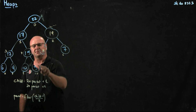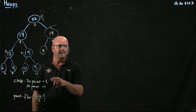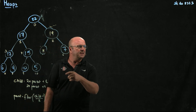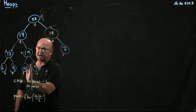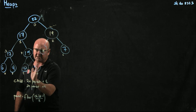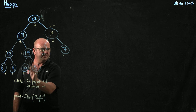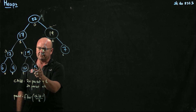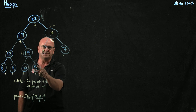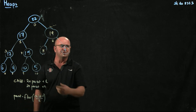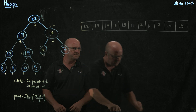In this case, we swapped the 22 and the 5, and then we trickle down the 5, and we decrement our last position pointer, so that where the 22 moves to is no longer part of the heap.